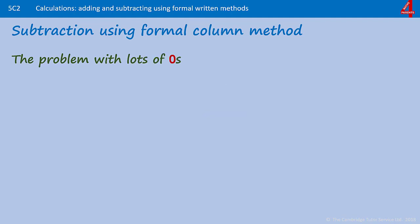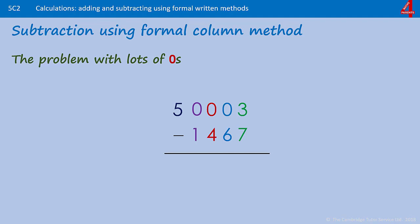A little bit more confusing is when there's more than one zero in between significant digits — digits that aren't zero. For example, 50,003 take away 1,467. Starting with the ones: three take away seven we can't do. We look at the next column — that's a zero. The next column — that's a zero. The next column — that's a zero. The first significant digit we come to is five, so we take one from that five and make it four.